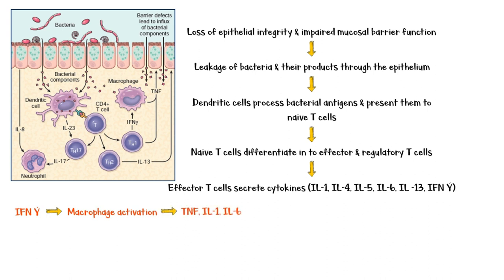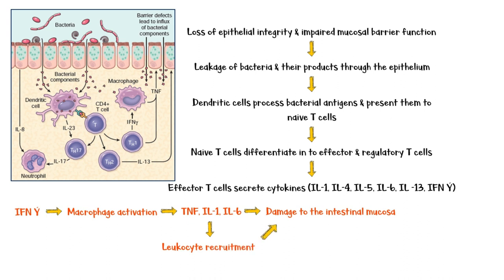Activated macrophages then secrete more cytokines, including tumor necrosis factor alpha, interleukin-1, and interleukin-6, which cause direct damage to the intestinal mucosa. Moreover, they trigger the recruitment of more leukocytes in a vicious cycle, which ultimately causes more and more epithelial damage.